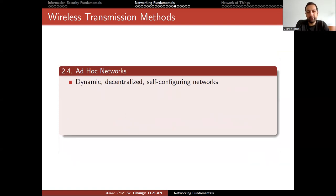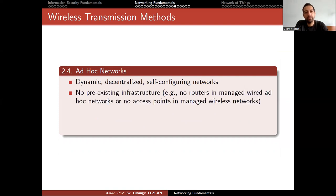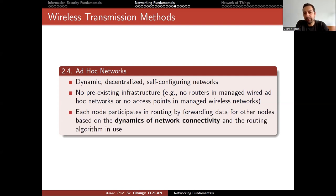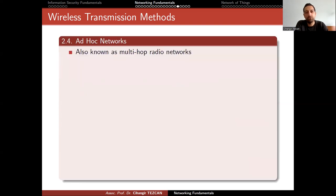Let's move on to ad hoc networks, which might be a good solution when we have natural disasters. These are dynamic, decentralized, self-configuring networks with no pre-existing infrastructure. During the earthquake, we lost the infrastructure — that is actually the good thing about ad hoc networks: they don't need an existing infrastructure. There are no routers in managed wired networks and no access points required. Each node participates in routing by forwarding data for other nodes based on network connectivity and the routing algorithm in use.